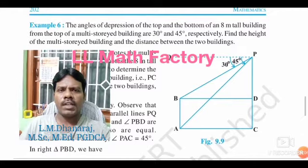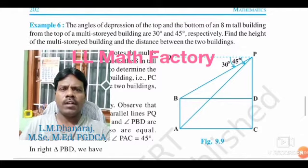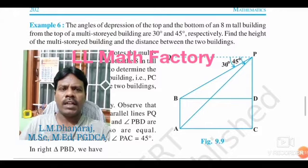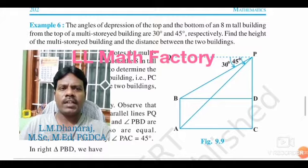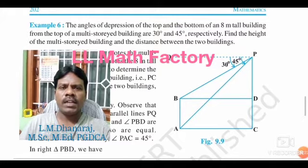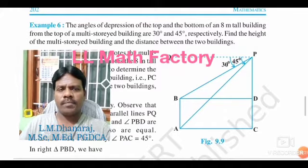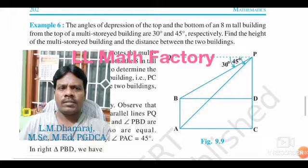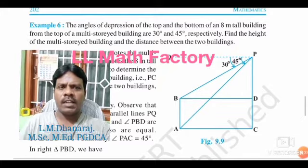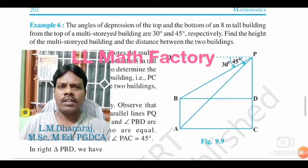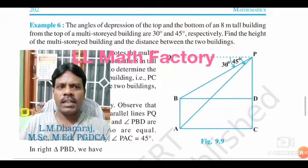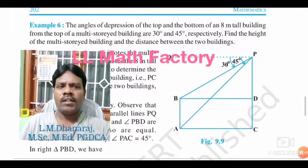Example 6: The angle of depression of the top and bottom of an 8-meter tall building from the top of a multi-storied building are 30 degrees and 45 degrees respectively. Find the height of the multi-storied building and the distance between the two buildings. AB is the smaller building with height 8 meters, and PC is the multi-storied building. We have to find PC and the distance between AB and PC.